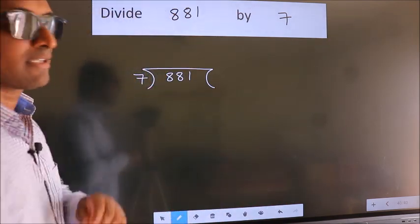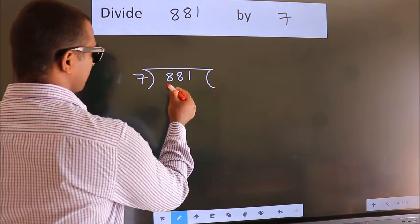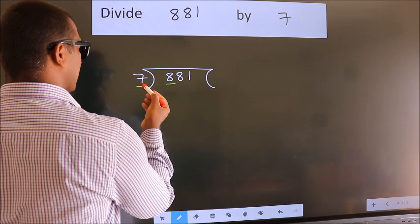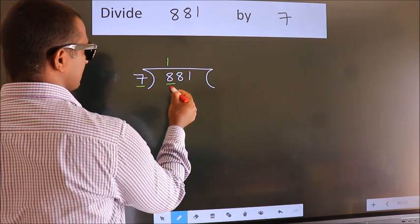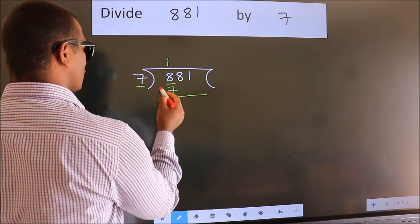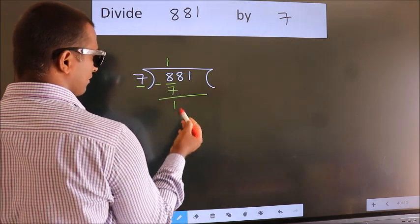Next, here we have 8, here 7. A number close to 8 in 7 table is 7 once 7. Now, we should subtract. We get 1.